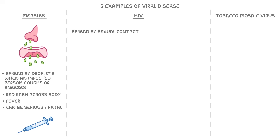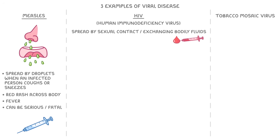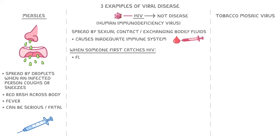HIV, on the other hand, can be spread by sexual contact, such as unprotected sex, or by exchanging bodily fluids, such as blood, for example when people share needles. HIV stands for human immunodeficiency virus, which tells us it affects humans and it causes a deficient or inadequate immune system. It's worth noting that when you use the term HIV, you're referring to the actual virus, not a disease. When somebody first catches HIV, they might get flu-like symptoms for a few weeks — fever, tiredness, and aches.